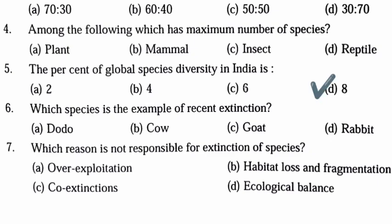Which species is an example of extinct species — Dodo, cow, goat, or rabbit? The answer is Dodo. Which reason is NOT responsible for the extinction of species? Options include: over-exploitation, habitat loss and fragmentation, co-extinction, and ecological balance. The answer is ecological balance — it is not responsible for species extinction; the others are.